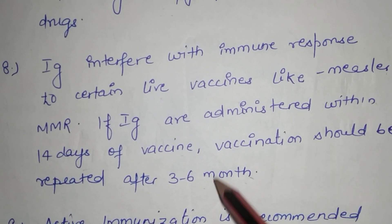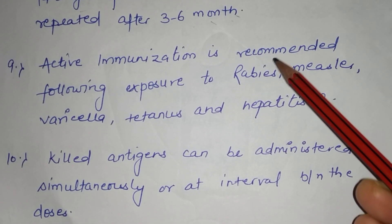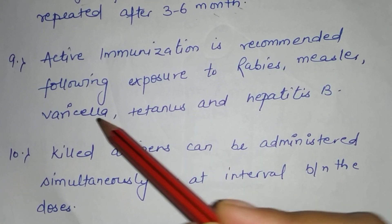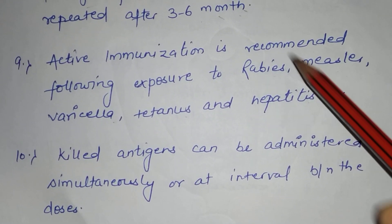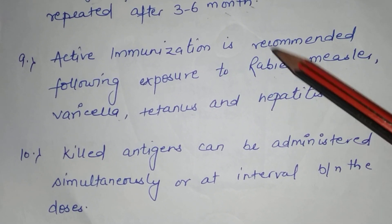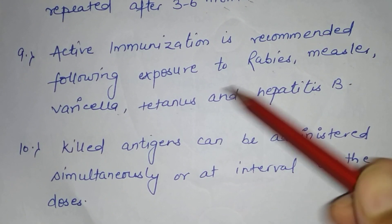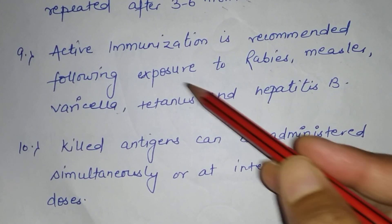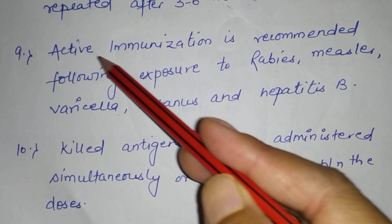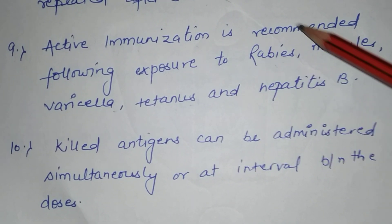Active immunization is recommended following exposure to rabies, measles, varicella, tetanus, and hepatitis B. If a person comes in contact with rabies — for example, a dog bite — or is exposed to measles, varicella, tetanus through a wound or bleeding, or hepatitis B, the person must take immediate active immunization.